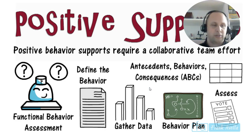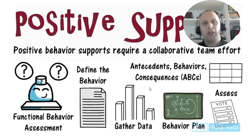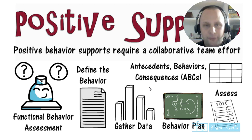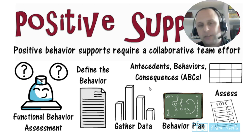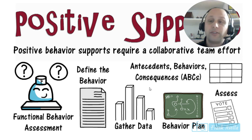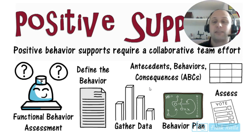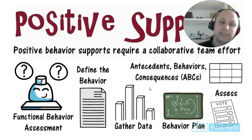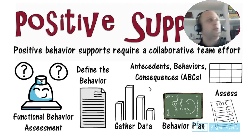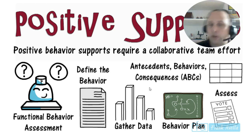Positive behavior supports require a positive collaborative team effort. It begins with a functional behavioral assessment — define the behavior, gather data, use ABC charts. FBAs are the basis for developing behavior plans. Any type of plan you do begins and ends with assessment — you want to know what's wrong and then see if you fixed that problem.